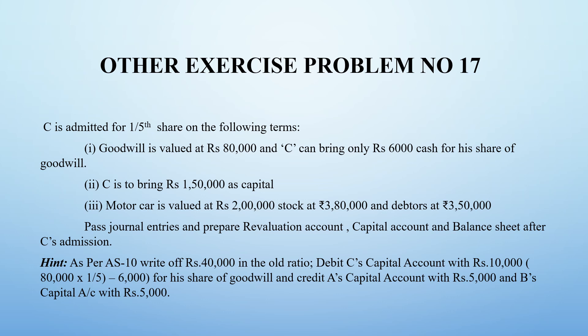This will apply for all the problems where they have given old goodwill and new goodwill. This is the accounting standard norm. Now, how do we apply this? How do we calculate the revaluation account and capital account?